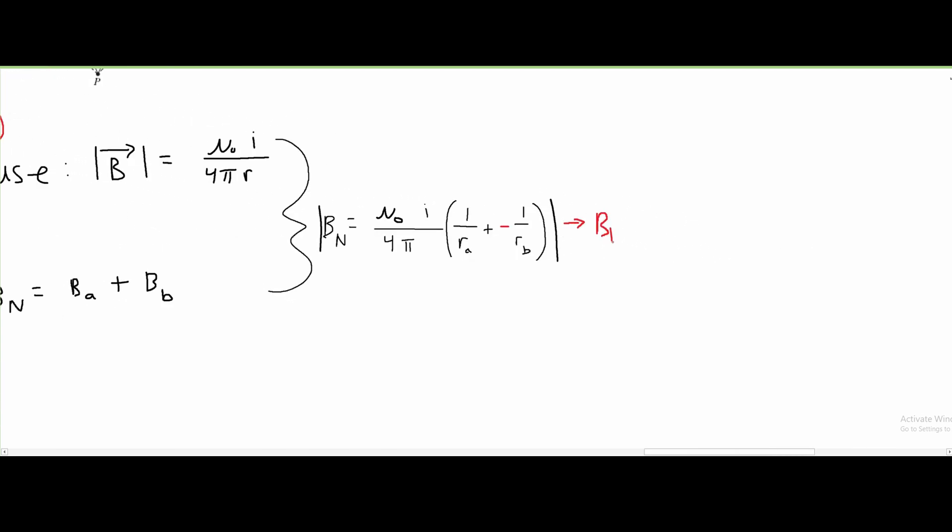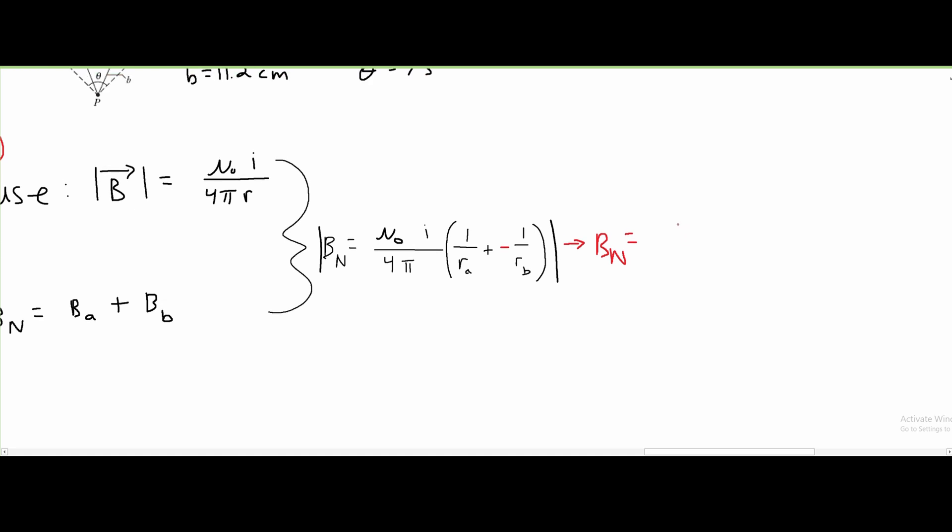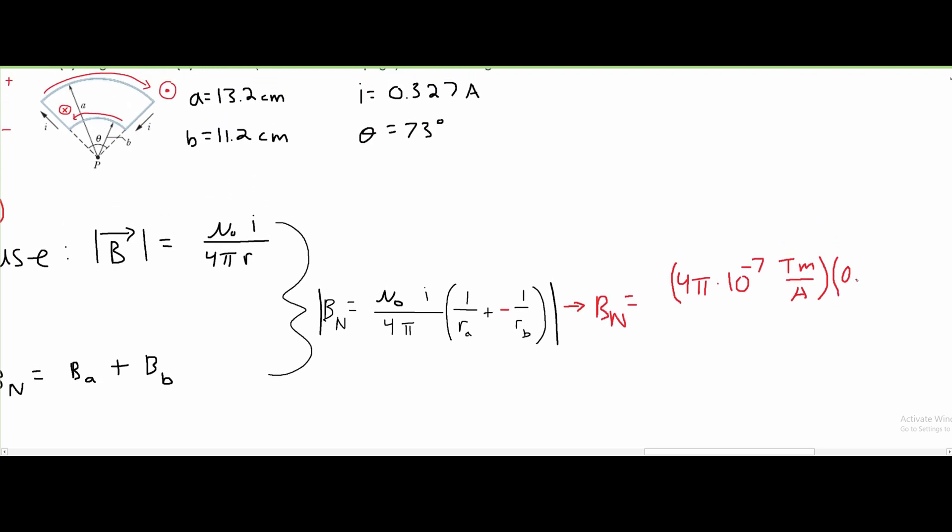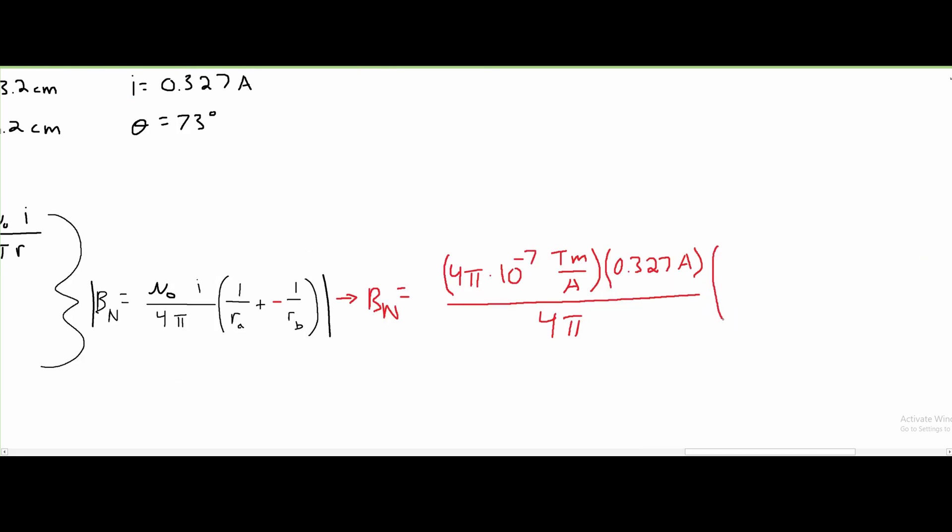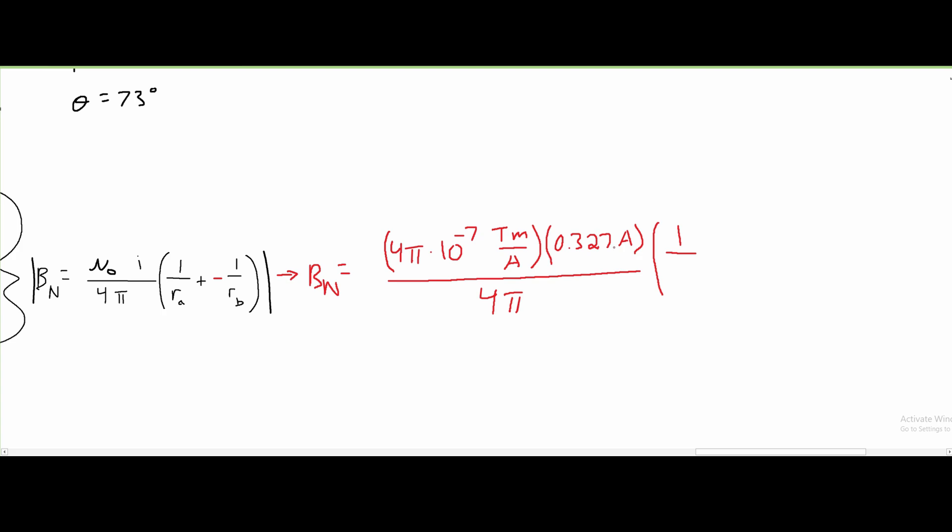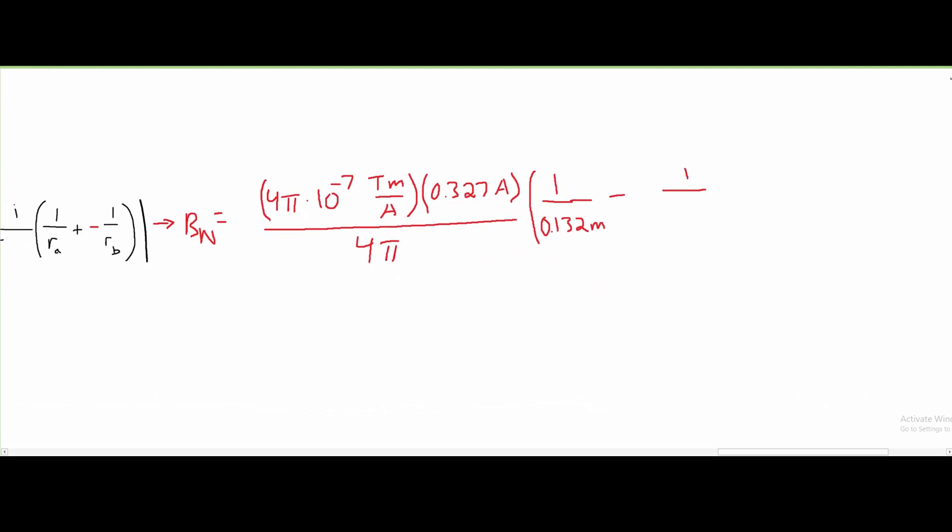We can start plugging in what we know. B_N equals our μ naught, which is a constant 4π times 10^-7 Tesla meters over amps, multiplied by our current I, which is 0.327 amps, all divided by 4π. We have our R_A, which is 13.2 centimeters or 0.132 meters, being subtracted by our R_B, which is 11.2 centimeters or 0.112 meters. This is all in absolute values.